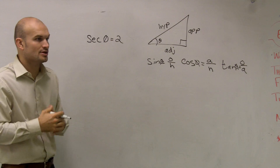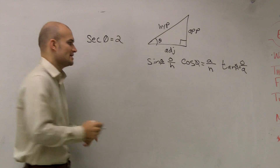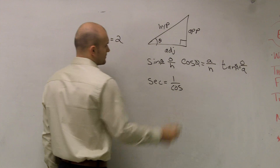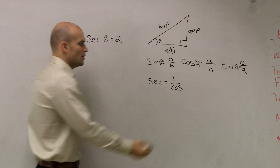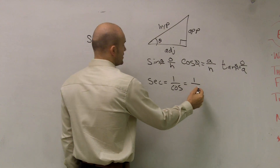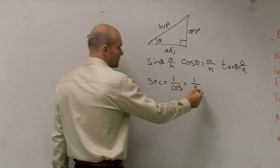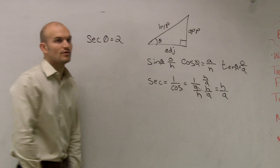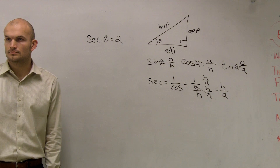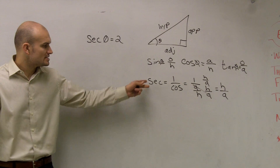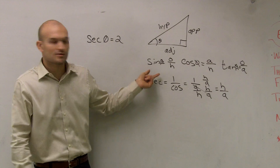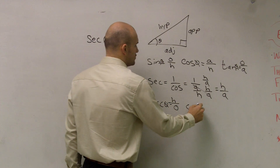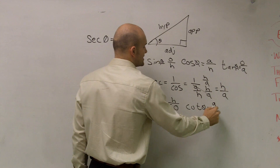Now what we're also including is our secant, cosecant, and cotangent. Secant is equal to 1 over cosine — it's the reciprocal property. So if cosine is adjacent over hypotenuse, then secant is hypotenuse over adjacent. Similarly, cosecant is the reciprocal of sine, so cosecant is hypotenuse over opposite. And cotangent of theta is adjacent over opposite.